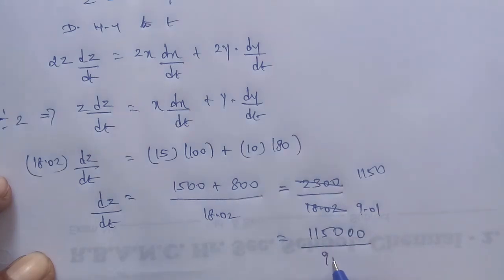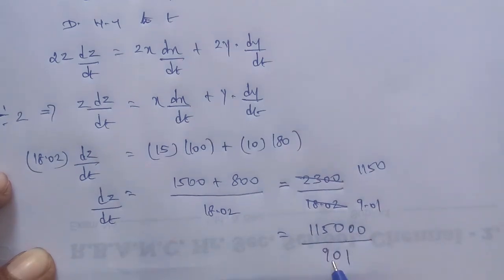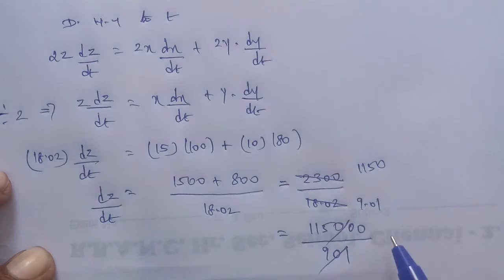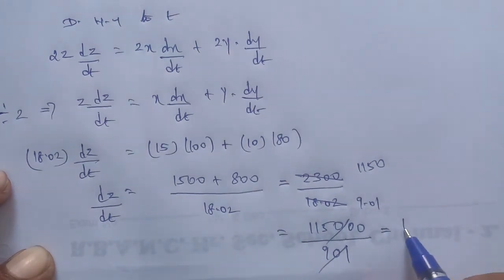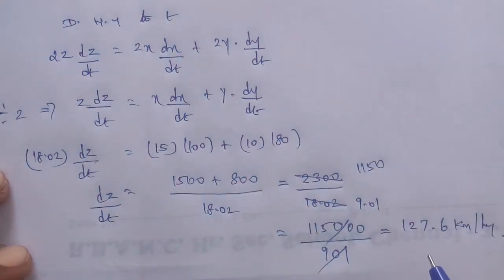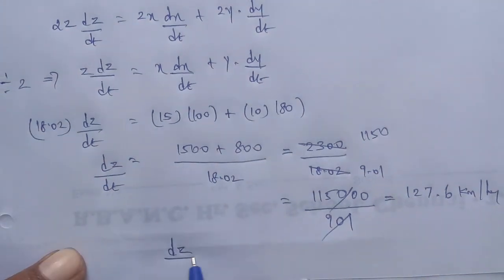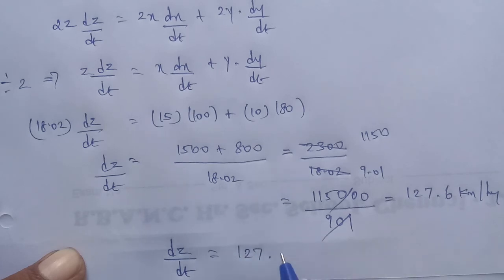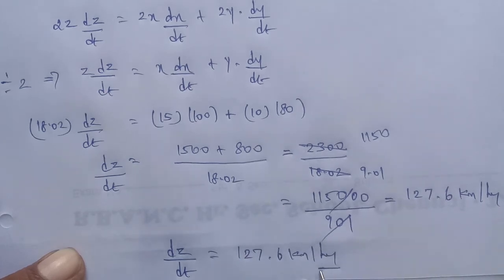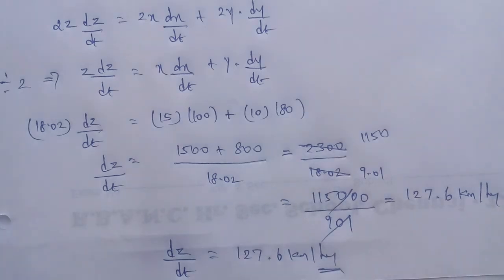So 18.02, 2300 divided by 18.02. Divided by 100, the answer is 1150 divided by 9.01. The answer is 127.6 km per hour. So dz by dt answer is 127.6 kilometer per hour. Thank you.